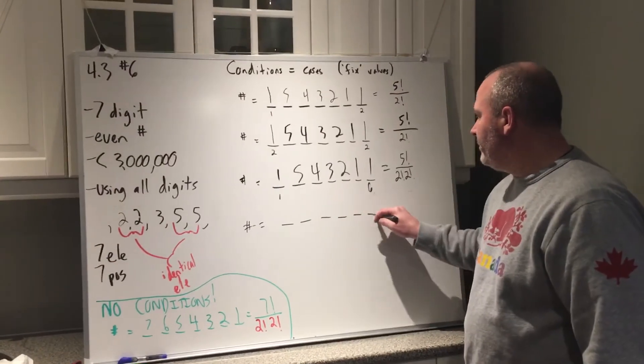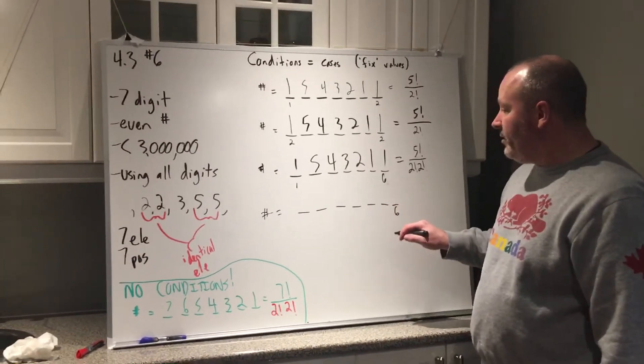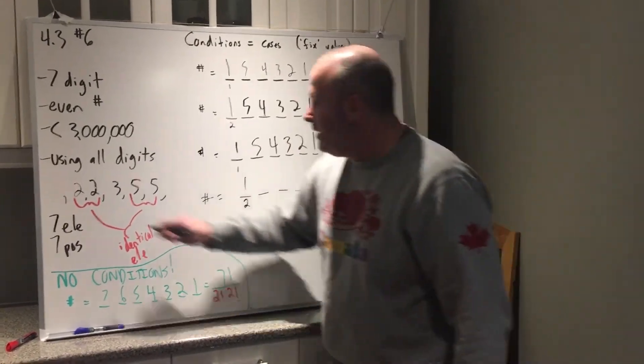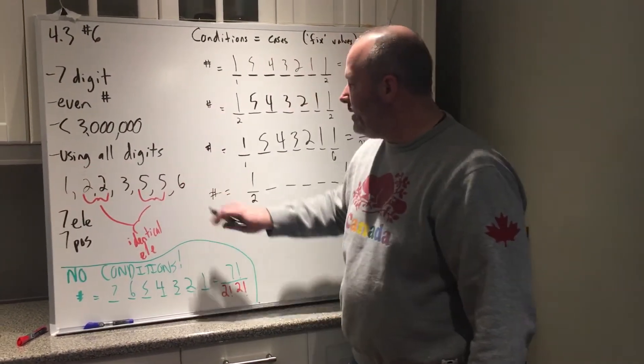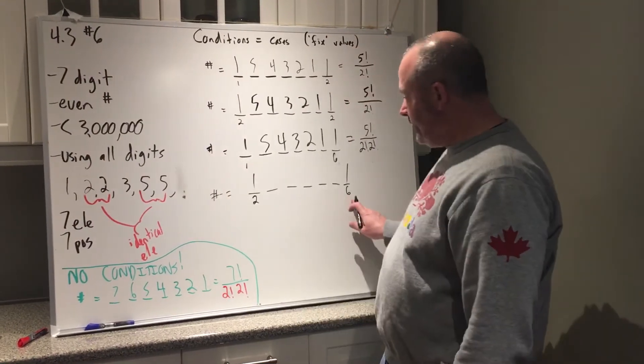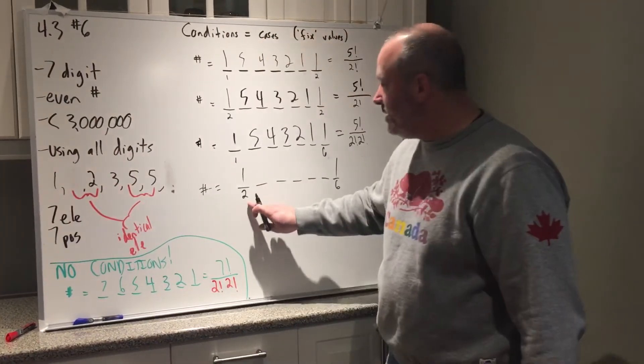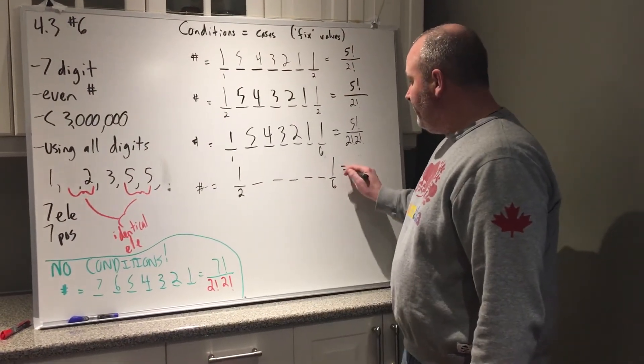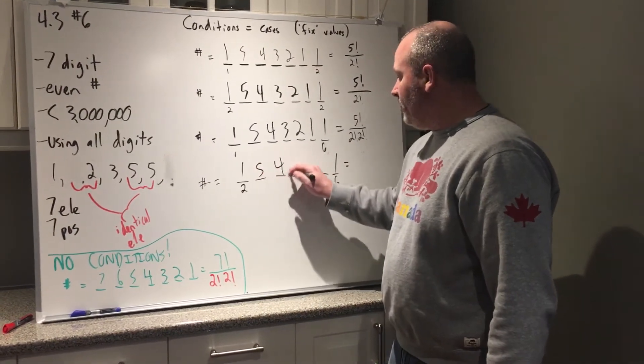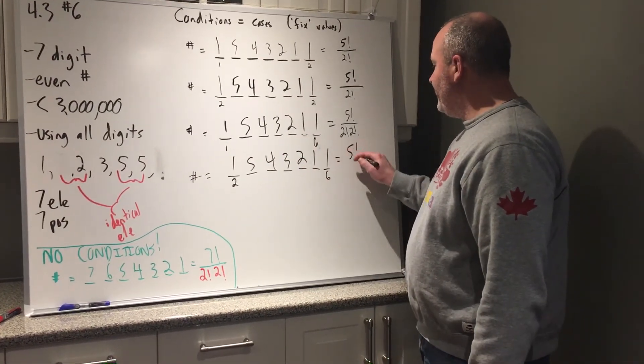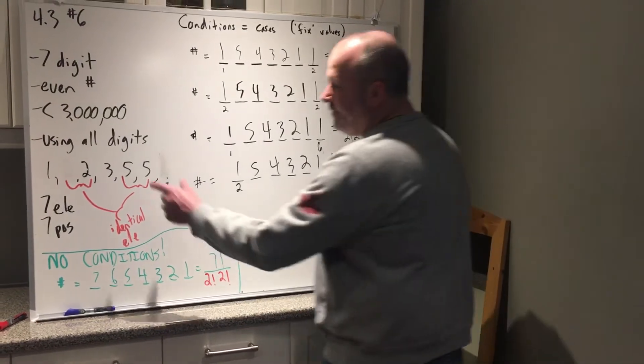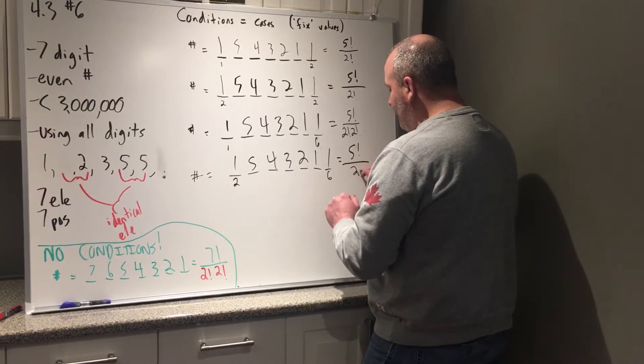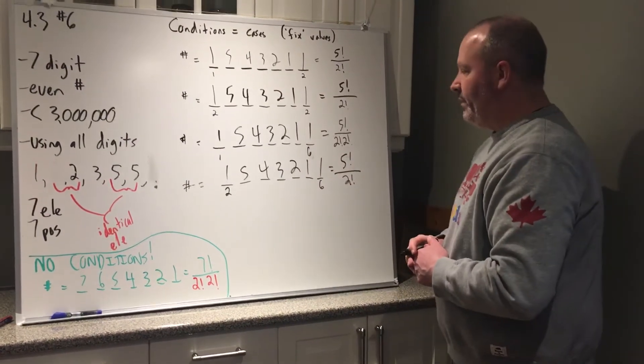So we have, again, a 6 here. And instead of having a 1 here, we have a 2 here. Fix them in place. We lose the 6 because it's stuck here. We lose a 2 because that's stuck here. 5 elements in 5 positions. 5 times 4 times 3 times 2 times 1, or 5 factorial. But I only have the 2 fives because that 2 is fixed here. The 2 fives mean I only divide by 2 factorial.